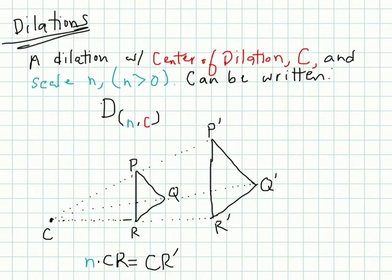Now the book goes into this a little technically. So let's look at more of a technical definition of dilations. So dilation, with a center of dilation C, so that would be right here. Here's the center. And a scale N, so that's how big it's going to grow by, as a factor of, right? And it has to be bigger than zero. Can be written as this. I'm going to dilate this much as a factor around this point C.